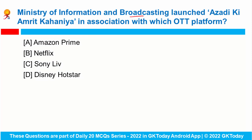The Ministry of Information and Broadcasting launched Azadi Ki Amrit Kahaniya in association with which OTT platform? The Ministry of Information and Broadcasting has launched the Azadi Ki Amrit Kahaniya short video series, created in collaboration with the OTT platform Netflix. The initiative aims to bring out inspiring stories of Indians to motivate people to achieve their goals. These videos will be available on various social media channels of the Ministry and Netflix, as well as broadcast across the Doordarshan network.